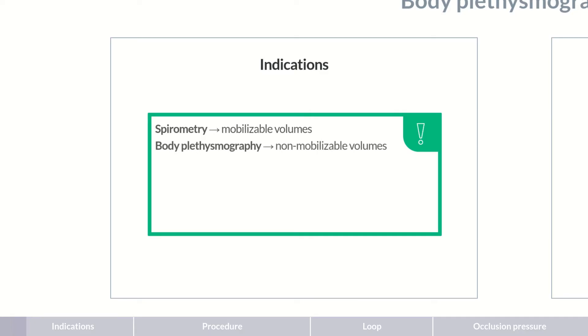Body plethysmography can additionally measure non-mobilizable volumes. These include the functional residual capacity, residual volume, total lung capacity, and airway resistance.